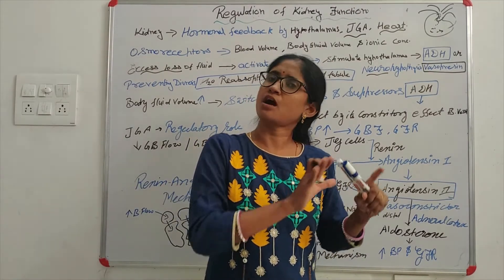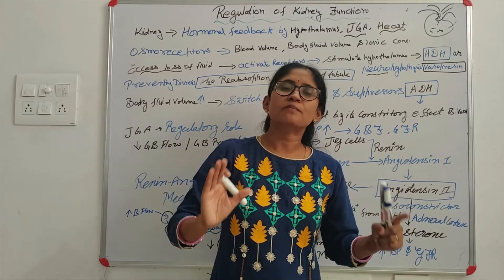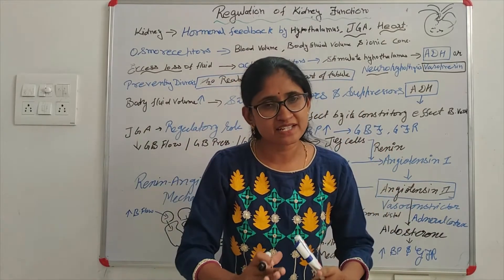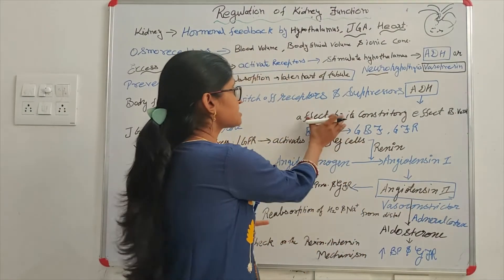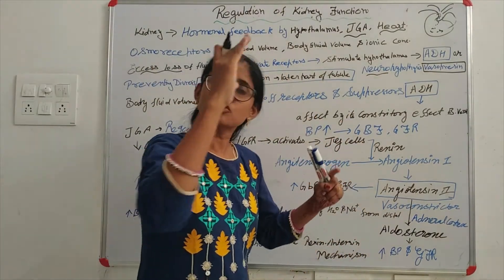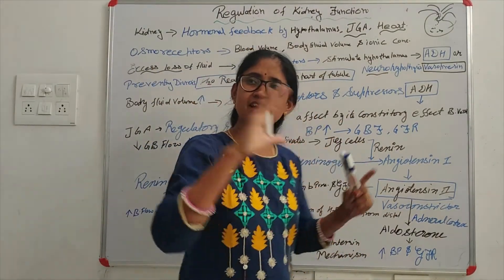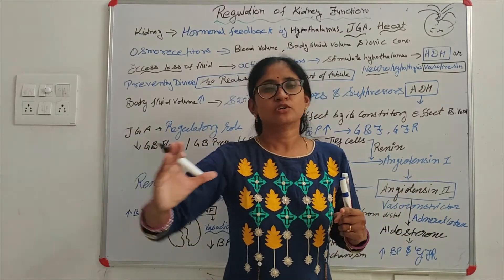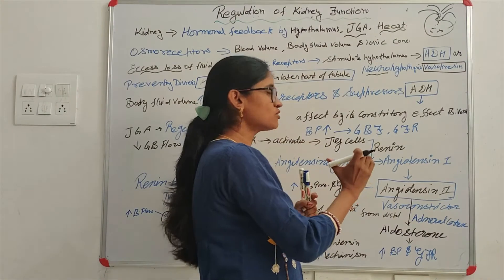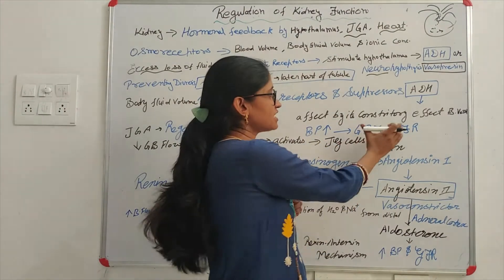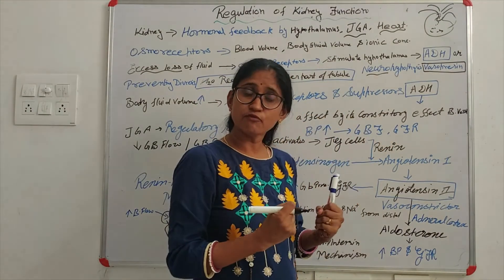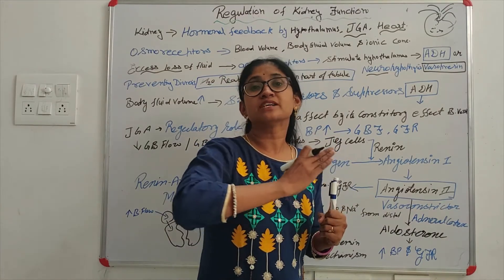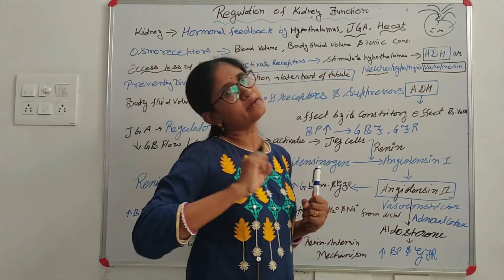Now look — if there is more fluid in your body, what will be done to remove it? The osmoreceptors are suppressed, meaning ADH release is suppressed. With less ADH, there is less vasoconstriction, so more flow and more filtrate. The result is more urine which will be expelled from the body.